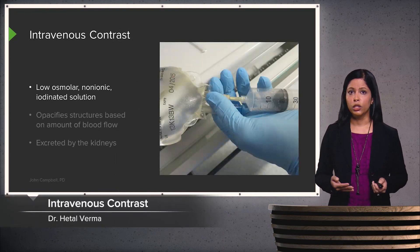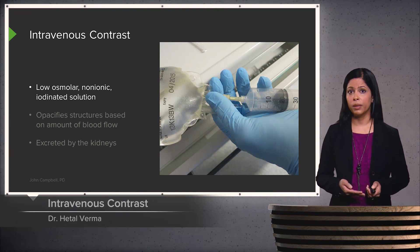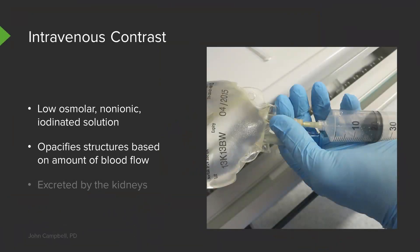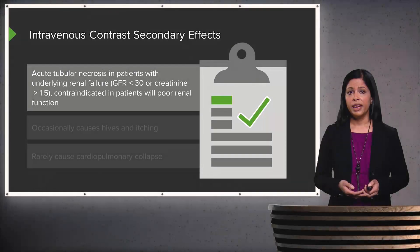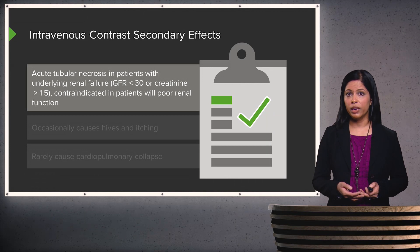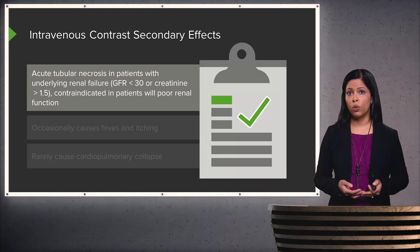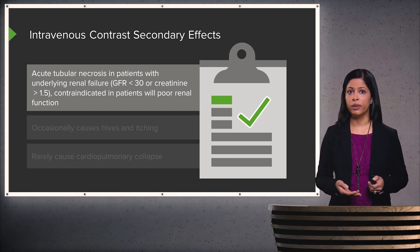Intravenous contrast is a low-osmolar non-ionic iodinated solution. It opacifies structures based on the amount of blood flow within that structure — structures with more blood flow will be more opacified. This is excreted by the kidneys and can cause acute tubular necrosis in patients with underlying renal failure. If a patient has a GFR of less than 30 or a creatinine of greater than about 1.5, intravenous contrast is contraindicated because it can cause acute tubular necrosis that may or may not be reversible.